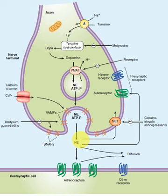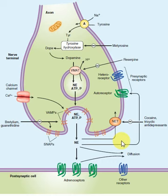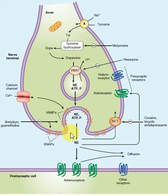Regarding the termination of action of norepinephrine, this can be prevented by various drugs. We have TCAs — tricyclic antidepressants — and also cocaine. These drugs inhibit the reuptake of norepinephrine from the synaptic cleft back into the cytoplasm of the pre-synaptic terminal.